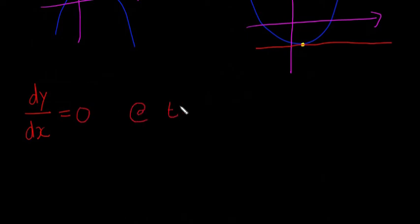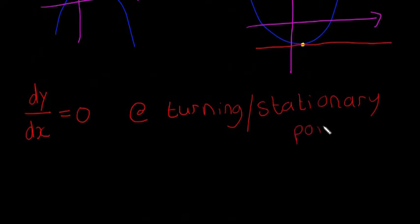Okay, and this is basically the rule we're always going to use. At turning—turning, okay, I made a mistake there obviously, just excuse that. At turning, and I'm going to say slash, stationary points. Okay, so remember that rule. That's the most important rule: that dy dx is equal to zero at turning or stationary points.